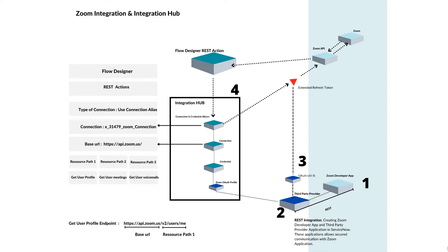In the connection record we also have a field where we can put the base URL — not the entire URL, just the base URL. So in our case, if we create a connection record, the base URL will be https://api.zoom.us. That is how the connection record is structured.